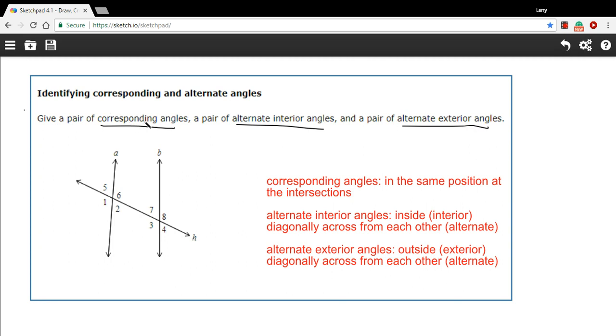Basically, there's two intersections here. The intersection of A and H and the intersection of B and H. Angles correspond if they're in different intersections, but in the same location in each intersection. So angle 5, for example, is in the upper left, so is angle 7.